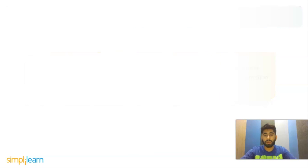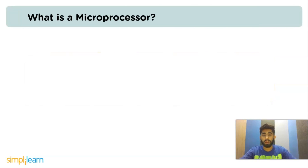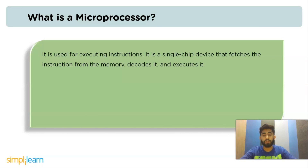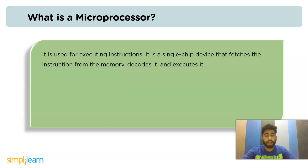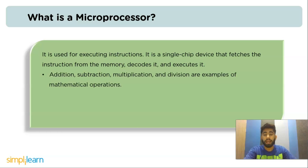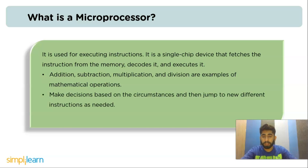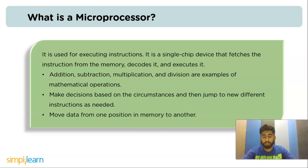The next question is: what is a microprocessor? A microprocessor is a device used for executing instructions. It is a single-chip device that fetches instructions from memory, decodes them, and executes them. The three basic functions carried out by a microprocessor are: performing mathematical operations such as addition, subtraction, multiplication, and division; making decisions based on circumstances and jumping to new instructions as needed; and moving data from one position in memory to another.